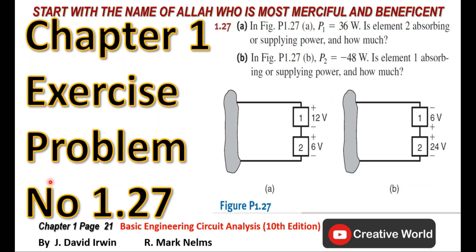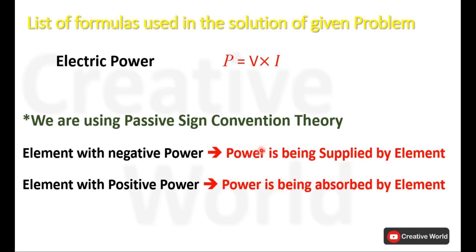Welcome to Creative World viewers. Today I will solve exercise problem number 27. In this scenario we will be using the electrical power formula — voltage multiplied by current — and we will also be using passive sign convention theory. According to this theory, an element with negative power will be considered as a power supplier.